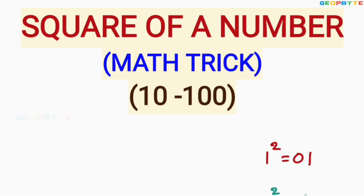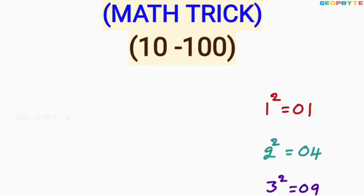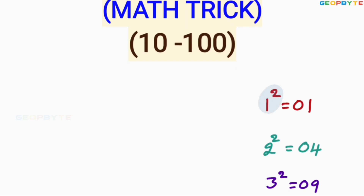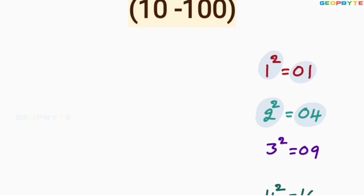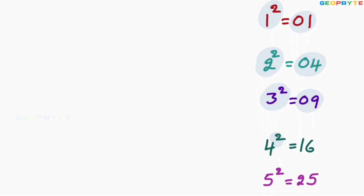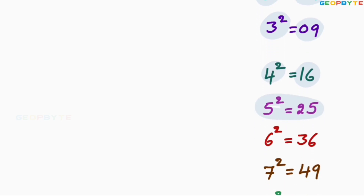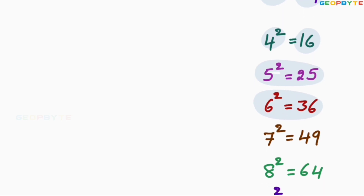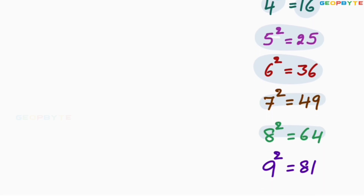For that, what you need to do is first try to remember the square of values from 1 to 9. You know, 1 square equals 1, but try to write it as two digits: 01. Similarly, 2 square equals 4, write as 04. 3 square equals 9, write as 09. 4 square equals 16, 5 square equals 25, 6 square equals 36. Similarly, 7 square, 8 square, and 9 square.